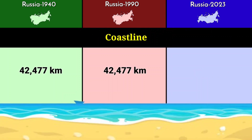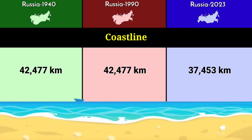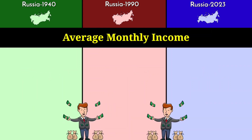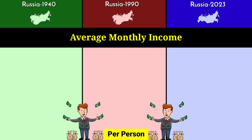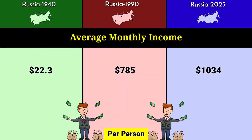Coastline: 42,477 kilometers in 1990, and 37,453 kilometers in 2023. Average monthly income per person: 22.3 dollars in 1940, 785 dollars in 1990, and 1,034 dollars in 2023.